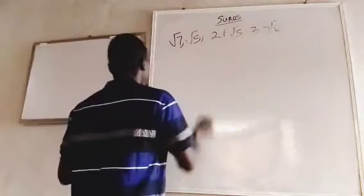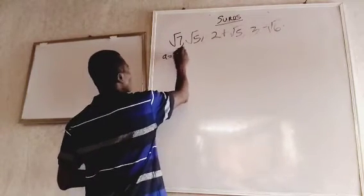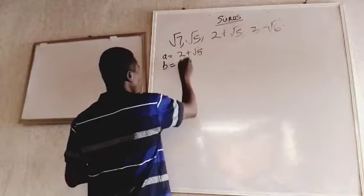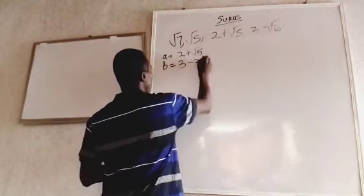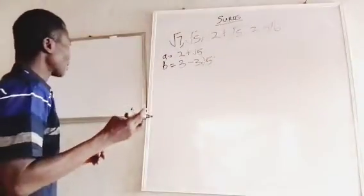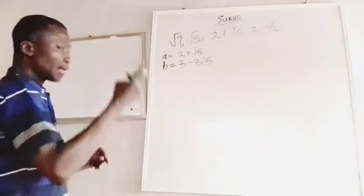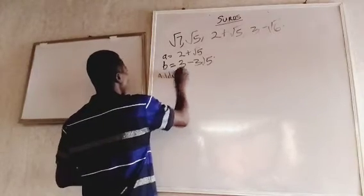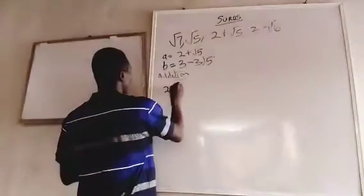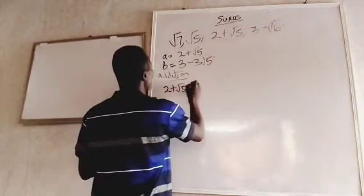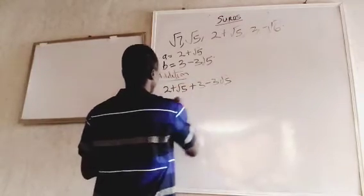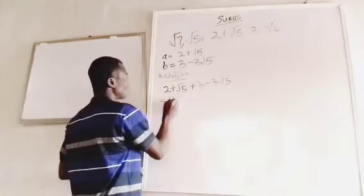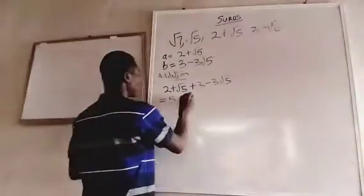Let's look at addition. Let a equal 2 plus root 5 and b equal 3 minus 3 root 5. For a plus b, that will be 2 plus root 5 plus 3 minus 3 root 5. The real numbers give us 5, and root 5 minus 3 root 5 gives us minus 2 root 5. So a plus b equals 5 minus 2 root 5.